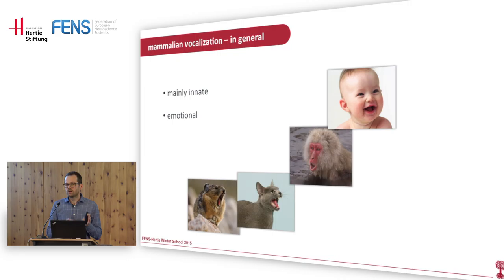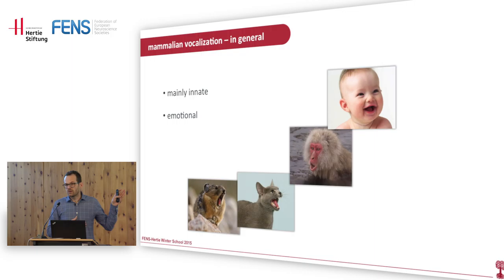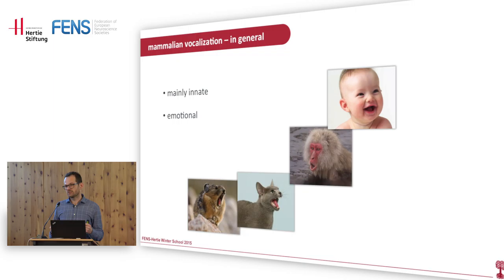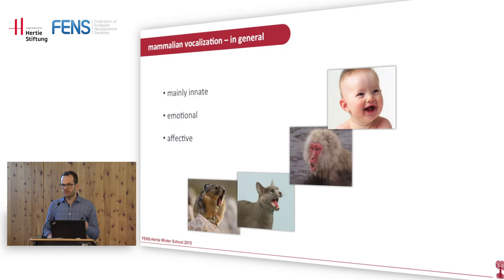Another key point is that mammalian vocalizations seem to be the expression of the animal's emotional state. Each call type is directly linked to a specific motivational state — when animals are in an alarm situation, they automatically produce alarm calls. This makes them directly homologous to our own non-verbal vocal utterances like laughing, crying, or moaning — these are our ancient primate vocalizations. So mammalian vocalizations can serve as a model for our non-verbal vocal utterances.